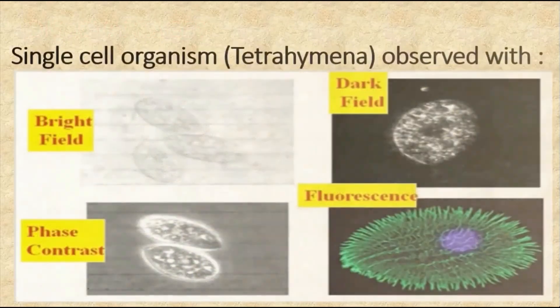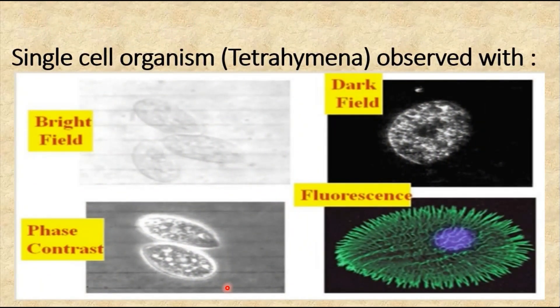Here are images formed by different microscopes for comparison. This is the image formed by the bright field microscope, the dark field microscope discussed in previous videos, and the phase contrast microscope covered in this video. The image formed by the fluorescent microscope will be discussed in the next video. This concludes the topic of the phase contrast microscope, and we will discuss the fluorescent microscope in the consecutive videos. Thank you.